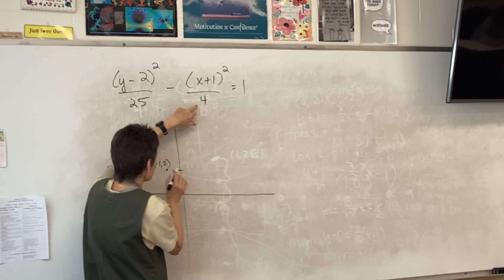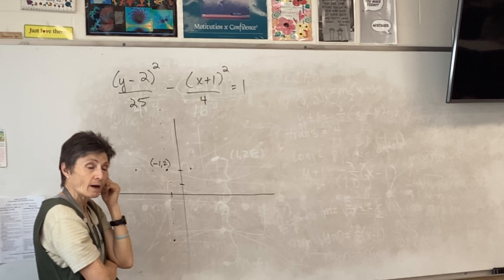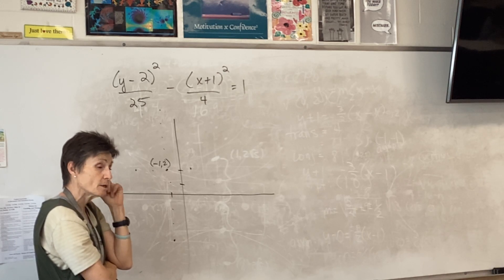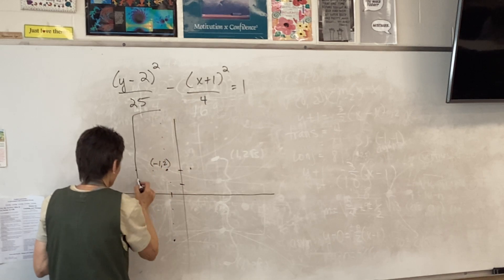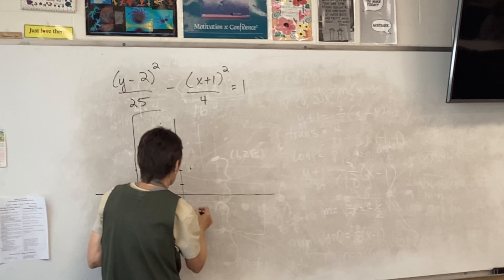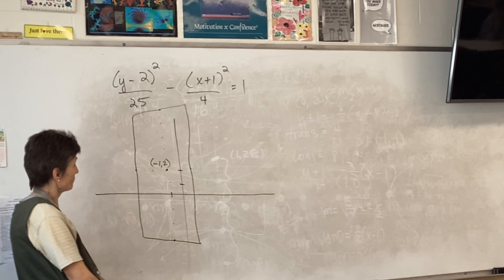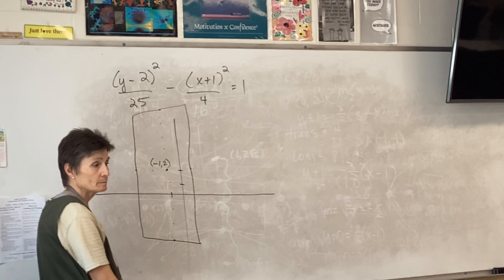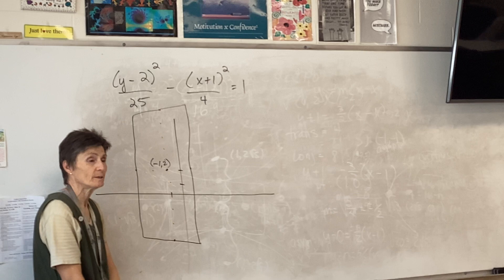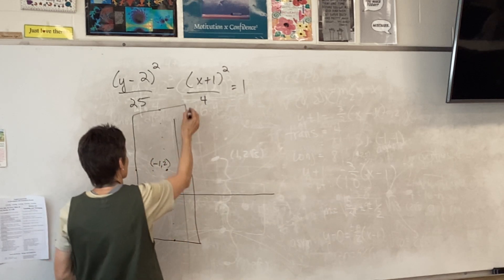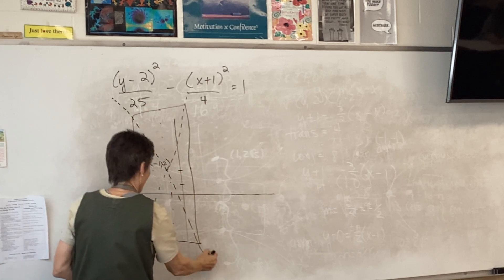Now we need to do our counting. The 25 tells me to count from my center: up one, two, three, four, five and down one, two, three, four, five. Then I count sideways from my center one, two, one, two. You can label those points as you go, then connect them with a rectangle — you'll have a really tall rectangle.